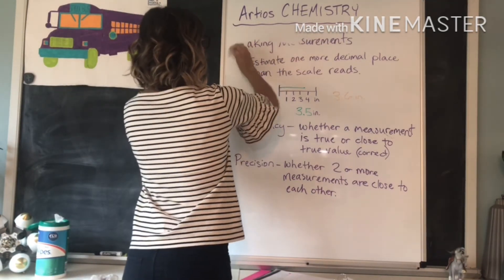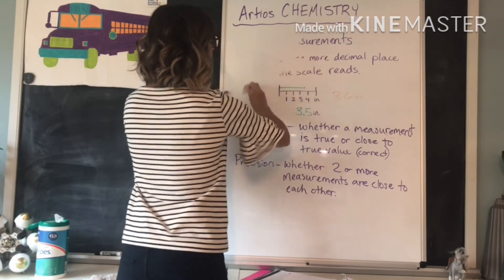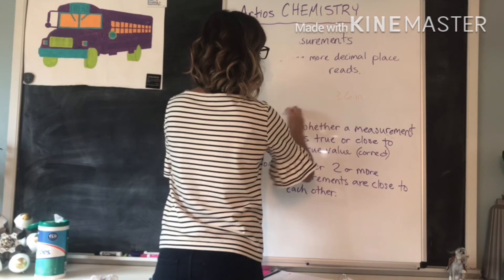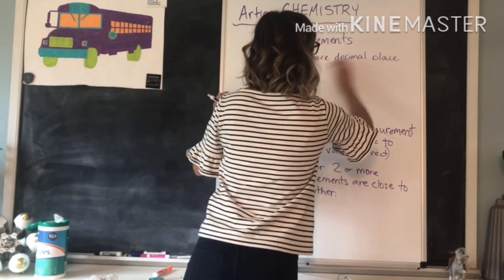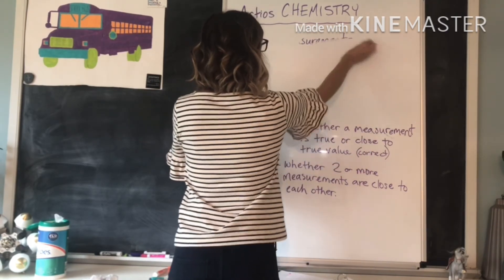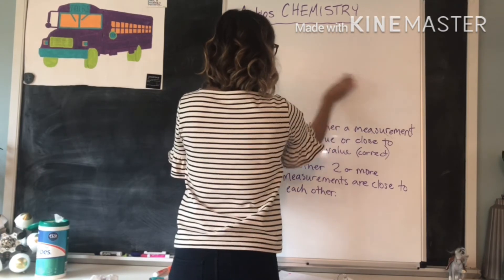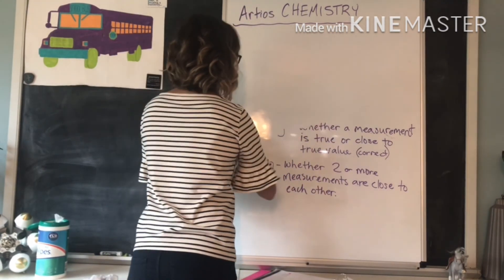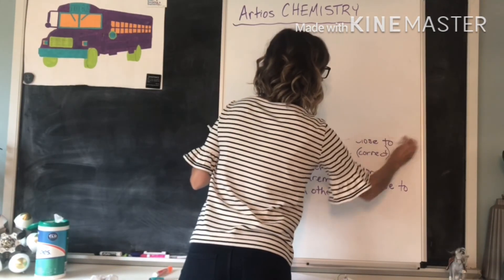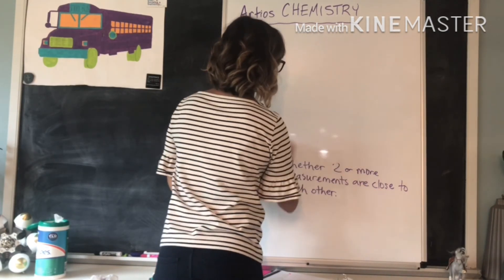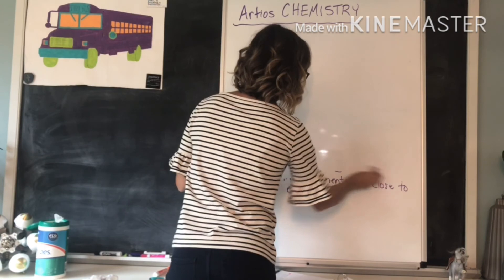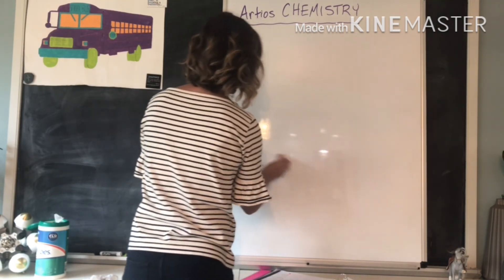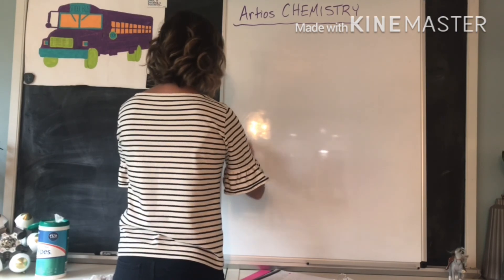Now a word on what we call significant figures. When you're talking about how precise you are you have to know how many significant figures to leave in your answer. So you did a calculation on your calculator and you came out with the answer of 21.7654321...